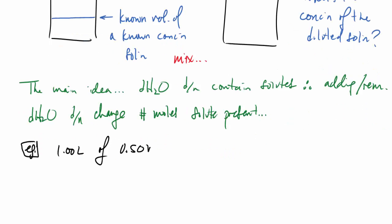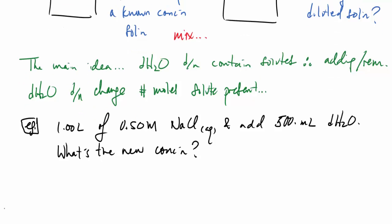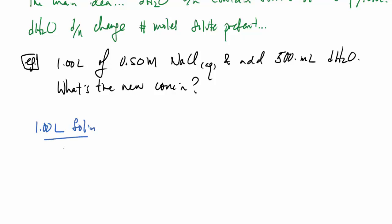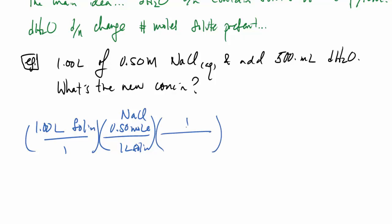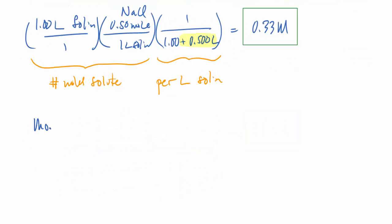For example, imagine we have 1 liter of 0.5 molar sodium chloride solution and we add 500 mL of distilled water. To find the new concentration, we start with 1 liter containing 0.5 mol of NaCl, then divide by the increased total volume of 1.5 liters. This gives us a new diluted concentration of 0.33 molar.